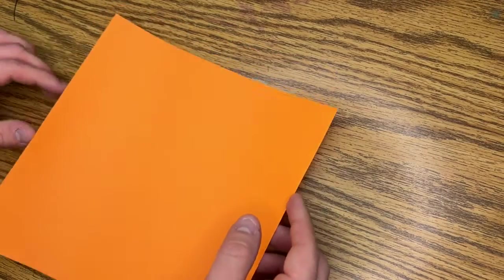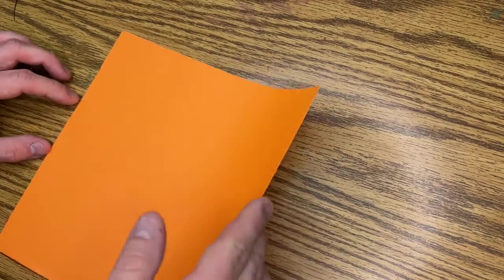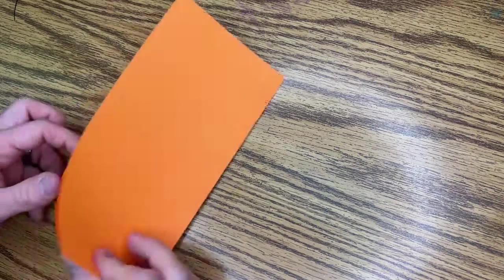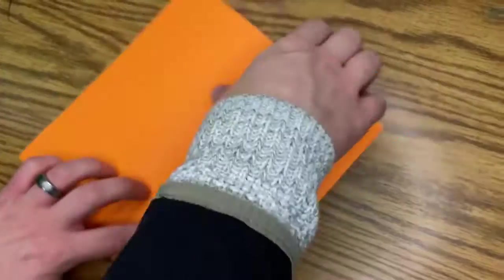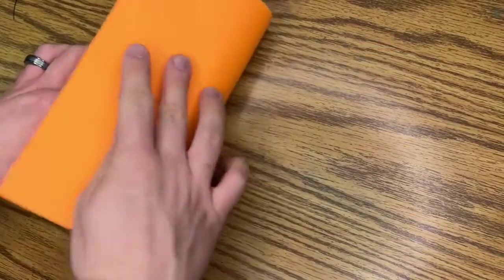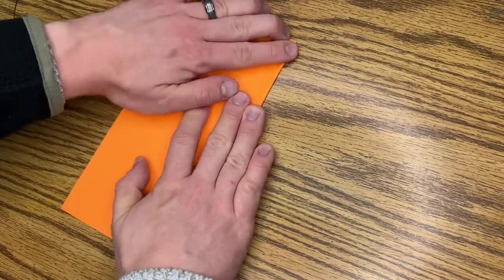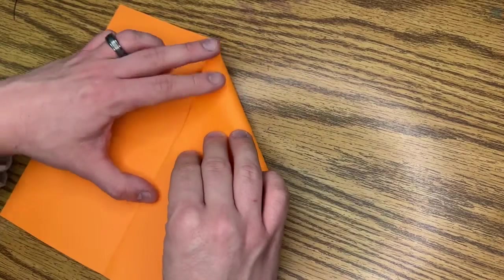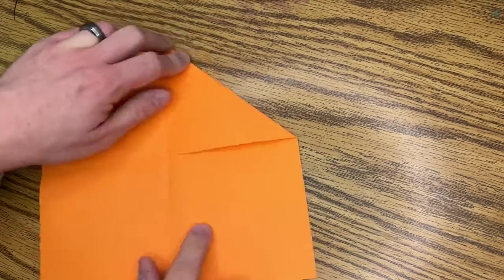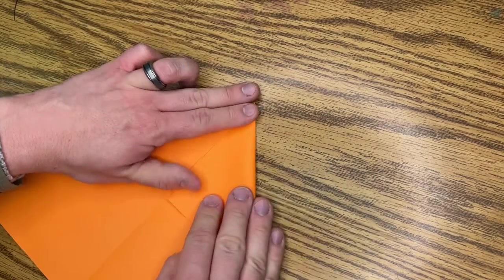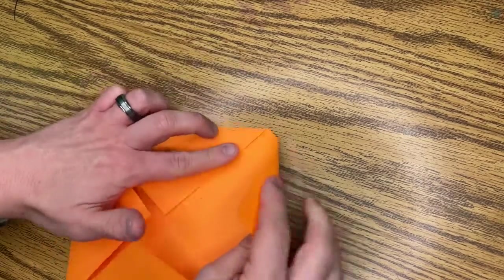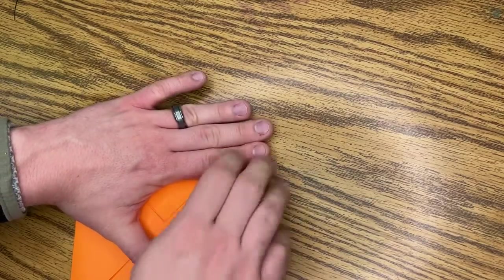All right, so we are going to be making origami fortune tellers. Whenever you start a fortune teller, you fold it in half, close it, open it up, fold it the other direction. So when I open this up, there should be kind of a cross like so. You're going to take all the corners and put them right smack dab in the middle as best you can. The better you line this up, the better it's going to turn out. Don't be lazy. Give it a really good fold.